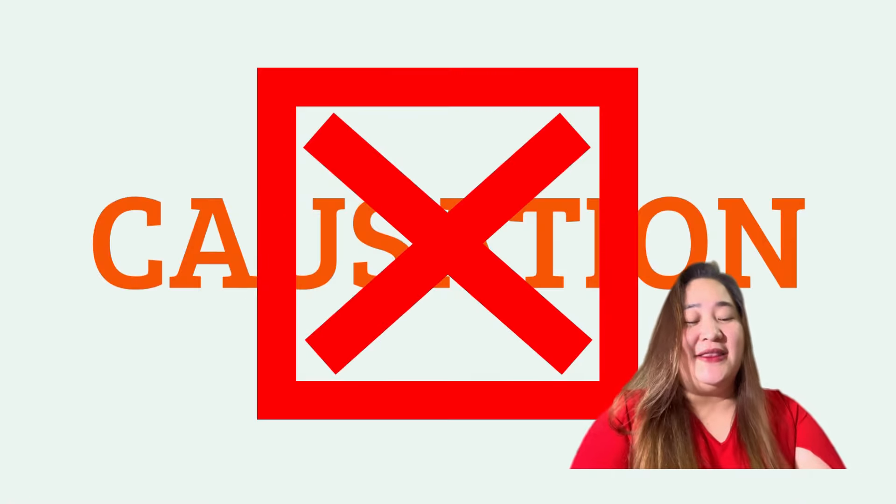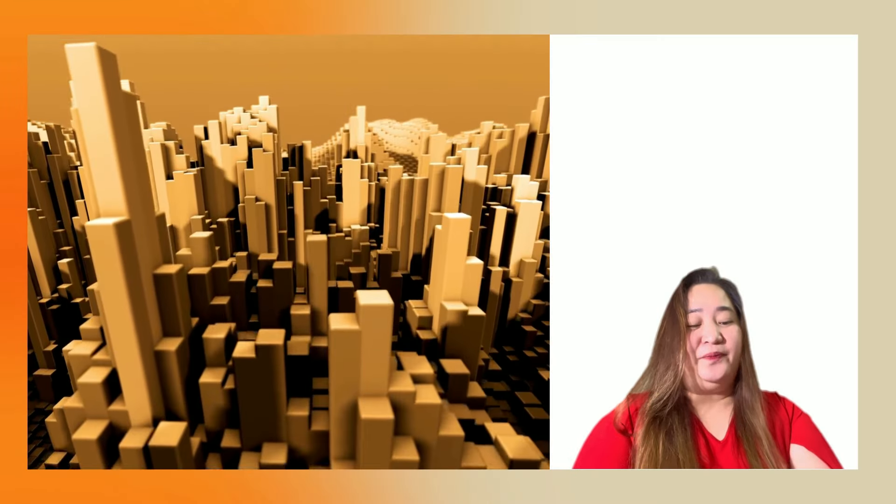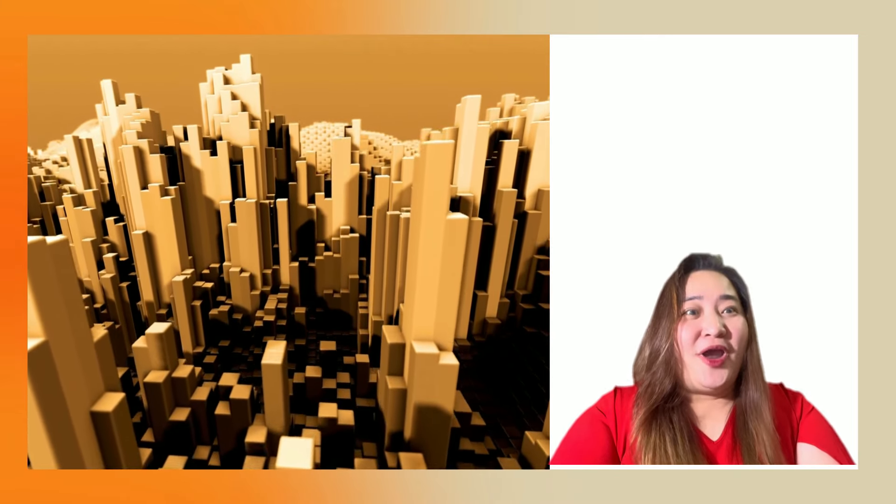Correlation does not imply causation. If we want to know about cause, then we need to have an experiment. Oftentimes, two variables appear to be linked to each other, but in actuality there is another unknown or third variable that is the real source of the link. This is called the third variable problem.